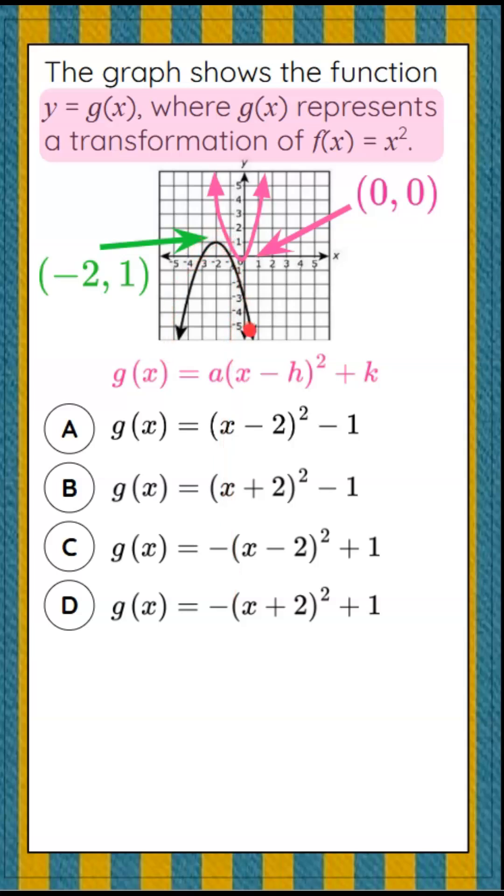When I see that this is a reflected function, that means that a is going to be negative. So I can see right here that a is only negative in choices c and d, so I know that I can eliminate choices a and b, because those represent a quadratic function that would open up, and this opens down, because it's a reflection of the parent function.